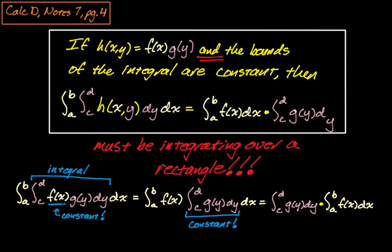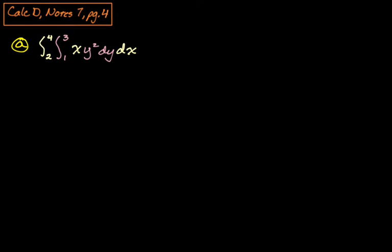All right, so what I'm going to do now is I'm going to do three double integrals. I'm going to use this property if it comes up. If it doesn't come up, I'm just going to do them the normal way. So here is the first: from two to four, from one to three, x times y squared dy dx. My first thought is I am integrating over a rectangle, so maybe I can use this property. And then I look at it and I can see that yeah, definitely I can use this property because my functions are x and y squared, and they're just functions of x and functions of y.